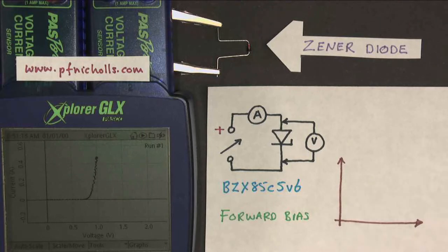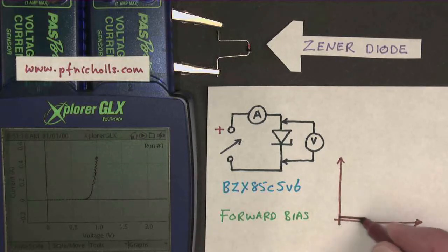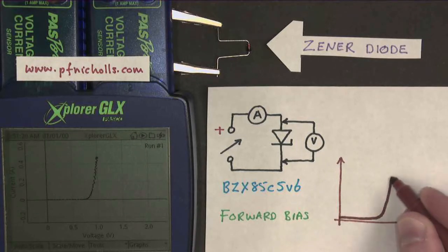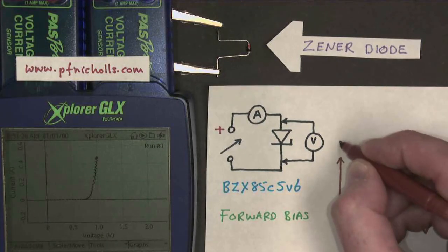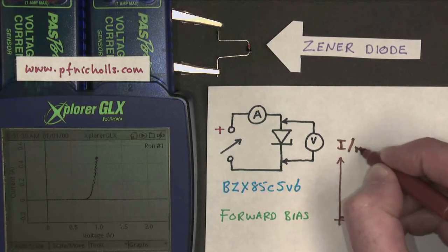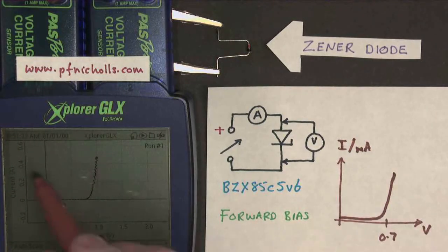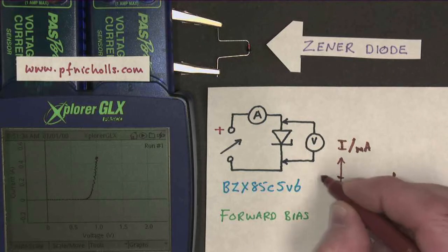If I draw the graph we've just got on the screen there, it goes along here, it goes up like that. This voltage is around about 0.7, this is the voltage axis, this is the current axis, and I was taking around about 400 milliamps.